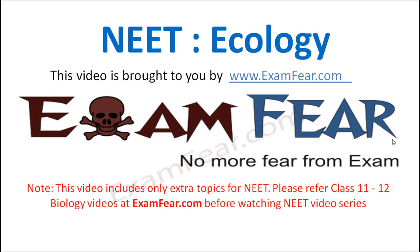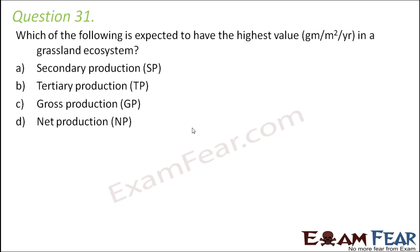This video on neat ecology is brought to you by examfear.com. Question number 31: which of the following is expected to have the highest value in terms of grams per meter square per year in a grassland ecosystem — secondary production, tertiary production, gross production, or net production?